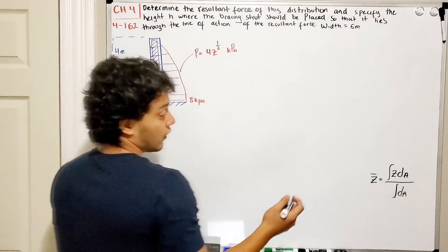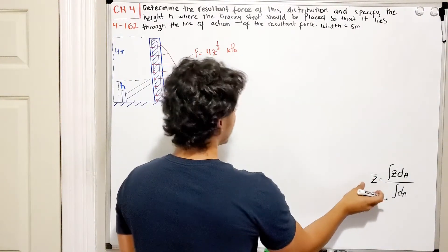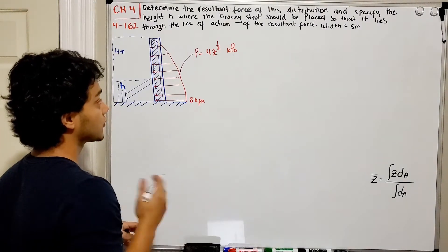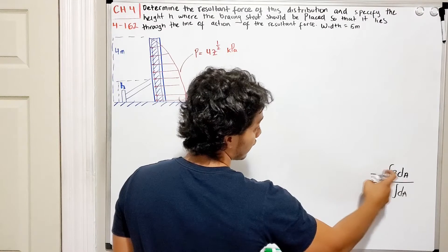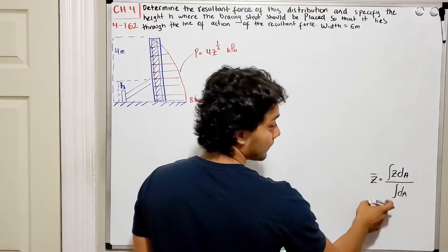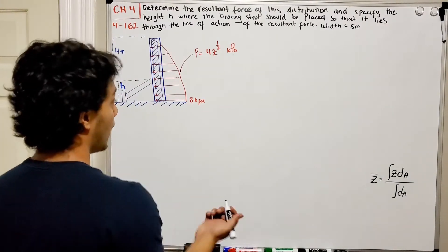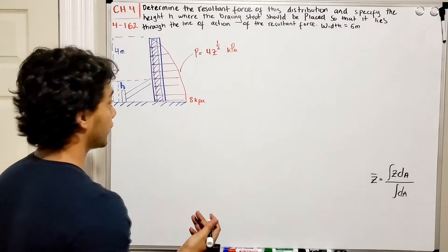How do we find the position of a distributed load that is not a regular shape like a triangle or a square? We use that the position is going to be the integral of the distance multiplied by the area divided by the integral of the area. But first, we need to find what the resultant force is.